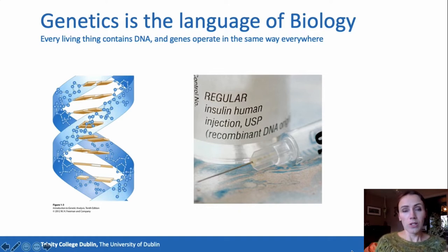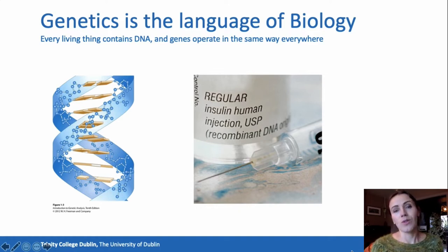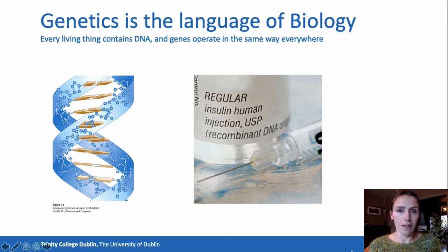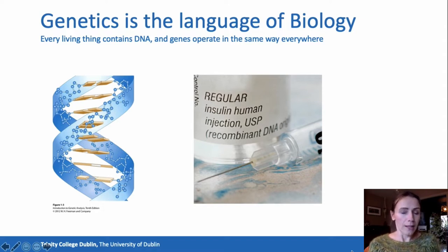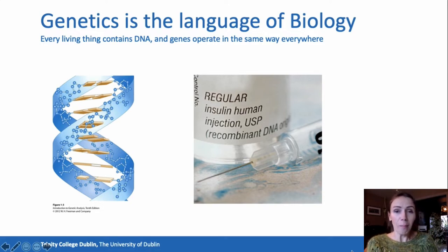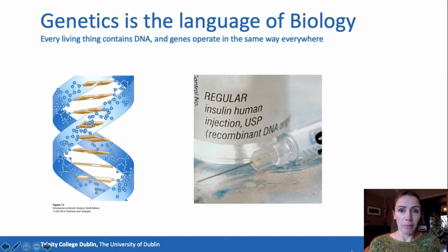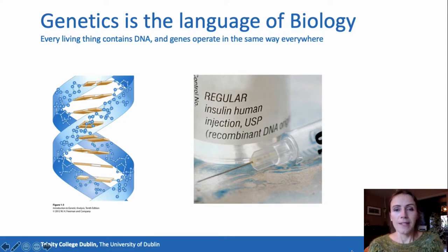The way genes work — transcription and translation in E. coli cells or in human cells — have really strong similarities. That means we can study simple organisms like bacteria and learn fundamental things about biology. We can learn how biology works, but we can also apply things in other ways.